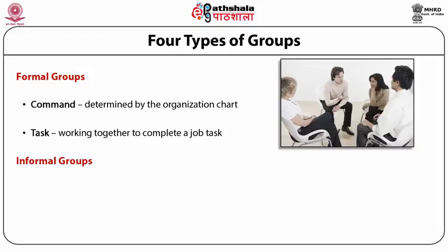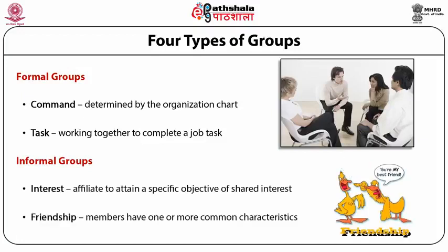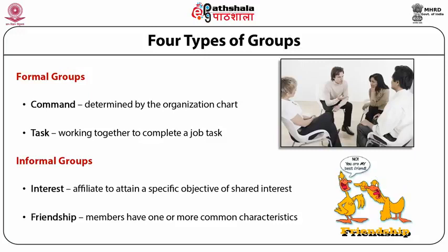Informal groups can further be understood in terms of interest groups or friendship groups. Interest groups are ones where individuals affiliate with each other to attain a specific objective of shared interest to the group, while friendship groups are the most informal ones where members have one or more common characteristics and love being in each other's company. They may or may not have any specific set of objectives, unlike task or command groups.